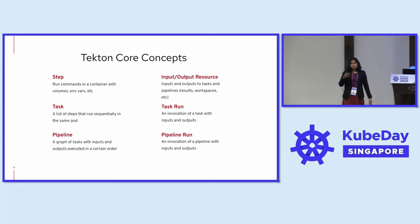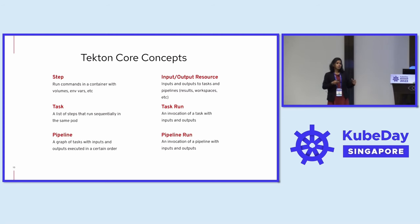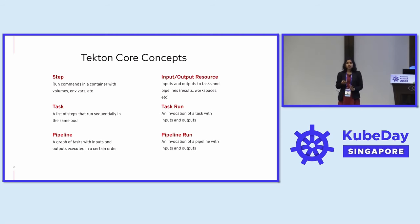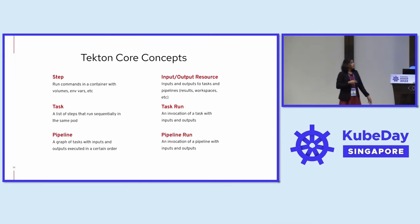Every tool has some basic concepts. In Kubernetes, if I want to run my application, I need to know deployment, service, and containers. Similarly, in Tekton we have core concepts like step, task, pipeline, input-output resources, task run, and pipeline run. I want to explain these concepts in a diagrammatic way.